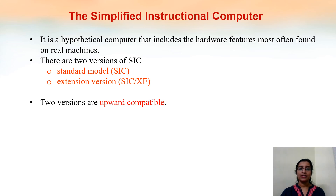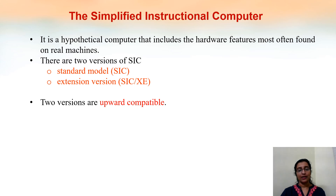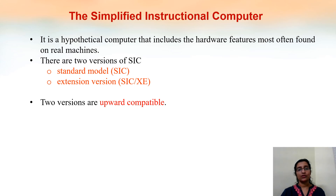SIC has two versions: the standard model, SIC, and an extension version, SIC/XC. Using these, we will learn system software. These two versions are upward compatible, which means whatever programs we write in SIC will also work on SIC/XC.